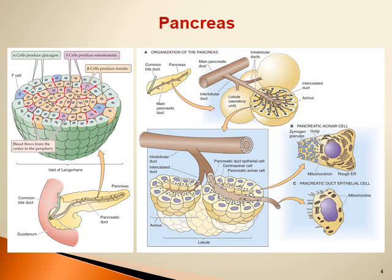The next most common cells are the alpha cells, located peripherally in the pancreatic islets, and these alpha cells produce the hormone glucagon. In addition to the alpha and beta cells, we have delta cells that produce somatostatin and F cells.